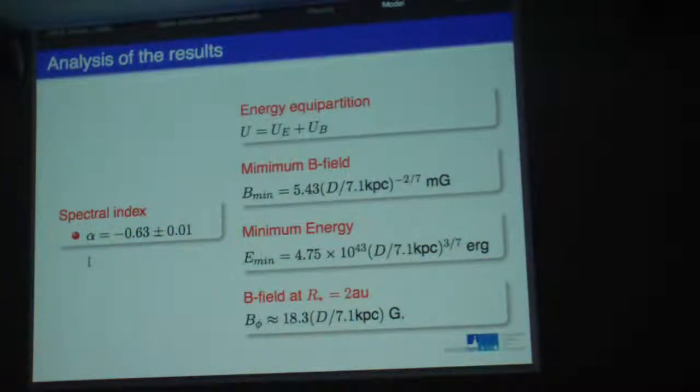We found that the non-thermal component of the emission has a spectral index of minus 0.6. Assuming that the energy of the emitting region is split between the magnetic field and the relativistic particles through energy equipartition, and minimizing the total energy with respect to the magnetic field, we found that the minimum magnetic field that the emitting region has is this strength. The distance of the source is not well determined, so we have this dependence on the distance.